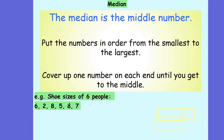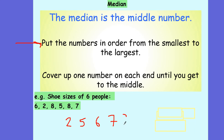For example, if I had the shoe sizes of 6 people — 6, 2, 8, 5, 8 and 7 — and I wanted to find the median, I start by putting the numbers in order from smallest to largest. So: 2, 5, 6, 7, 8 and 8. That's the order from smallest to largest.